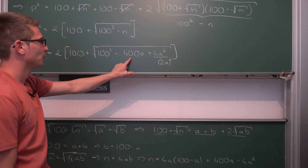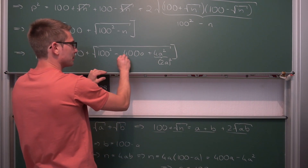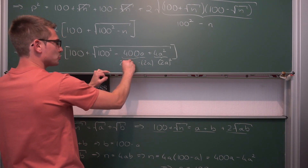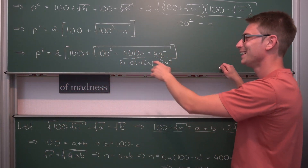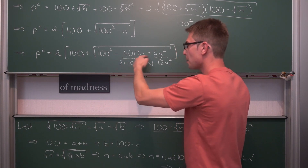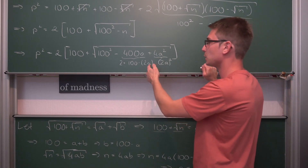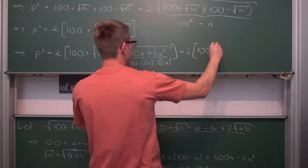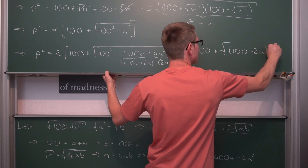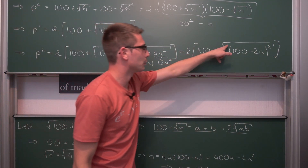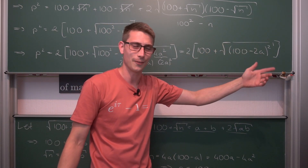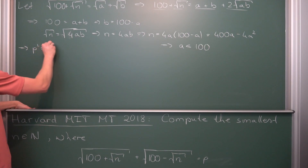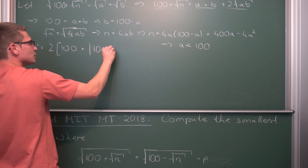Notice that 4a² = (2a)², and 10000 − 400a + 4a² is actually (100 − 2a)². So √(100 − 2a)² = |100 − 2a|. Therefore p² = 2(100 + |100 − 2a|). Since we're dealing with an absolute value, we need to go through some casework.